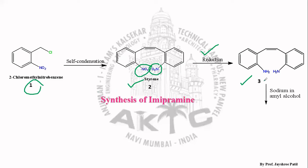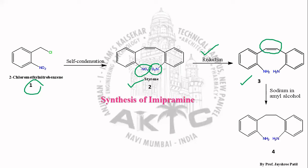When structure 3 is acted upon by sodium in amyl alcohol — in structure 3 there is a presence of a double bond, an unsaturation. The purpose of sodium in amyl alcohol is simply the reduction of this double bond. When structure 3 is treated with sodium in amyl alcohol, we get structure 4. Structures 3 and 4 look the same except for the presence of this double bond, which has been removed by using sodium in amyl alcohol.